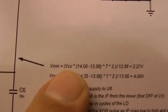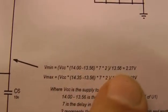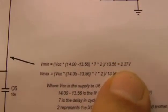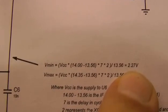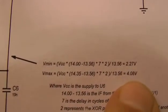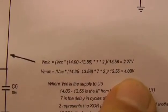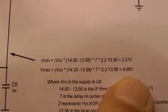If VCC equals 5 volts we do the sum and we come out with 2.27 volts if the VCO is at 14 MHz and 4.08 volts if the VCO is at 14.35 MHz.